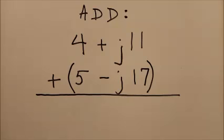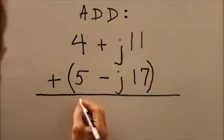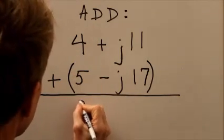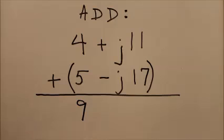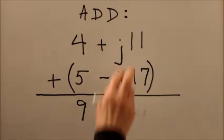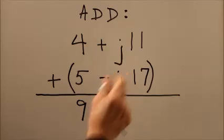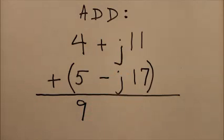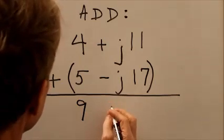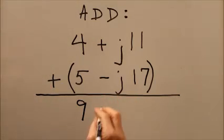In order to add complex numbers, we add the real parts. In this case we get nine—four plus five equals nine. And then we add the imaginary parts. In this case we have j11 plus minus j17, which is the equivalent of j11 minus j17, which is minus j6.